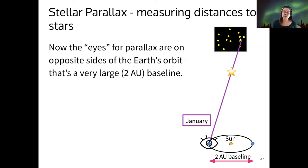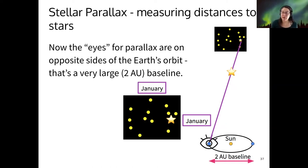During the month of January, we would see a nearby star against a much farther away background of fixed stars in one location. But then in July, on the other side of our orbit.